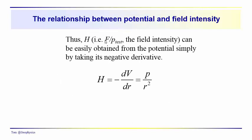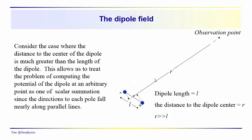Looking at the relationship between potential and field intensity H: the field intensity is equal to the force divided by the pole strength of the test pole, and we can easily obtain it by taking the negative derivative of the potential. The negative derivative of P over R gives us minus minus P over R squared, so we get H equal to P over R squared.